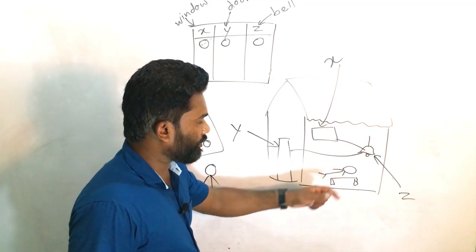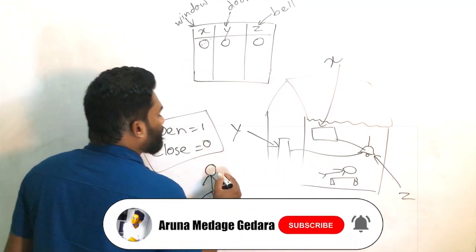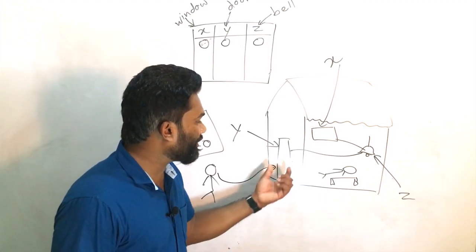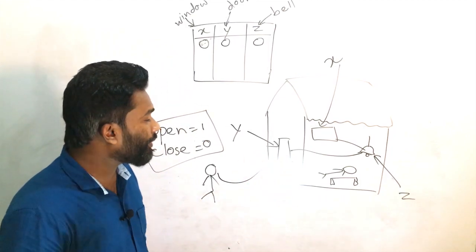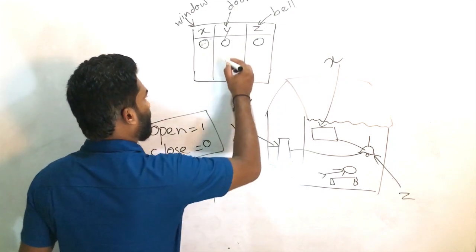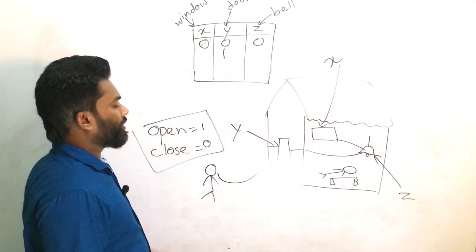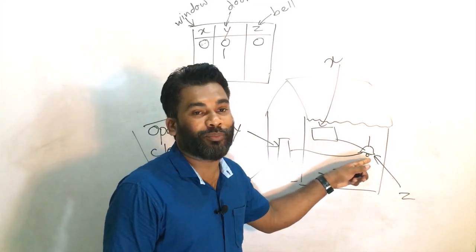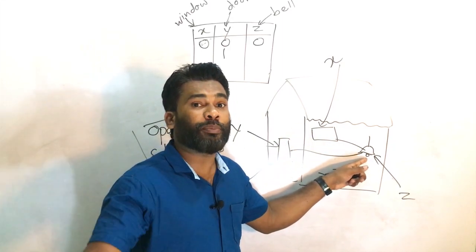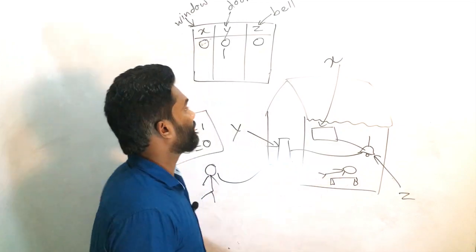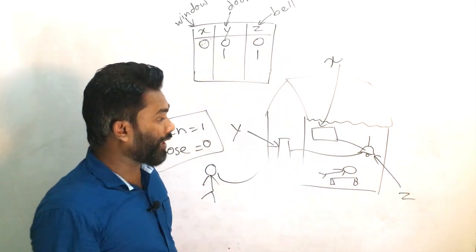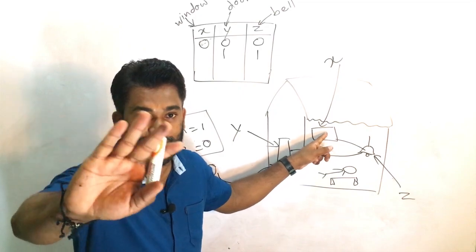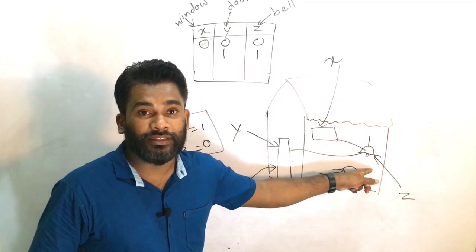One day a thief comes to steal the money. He tries to open the door — the opening process is 1. A message from this door goes to the bell, and the bell is ringing. But the window is closed, so a message from the window doesn't go to the bell.